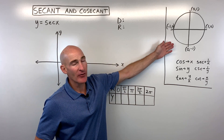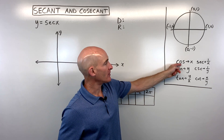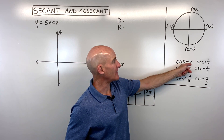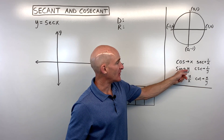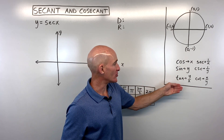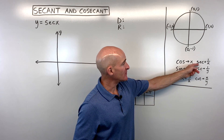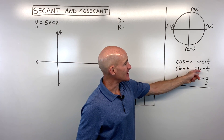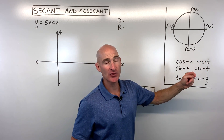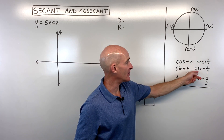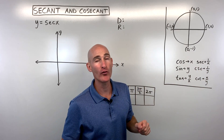If you've already learned about the unit circle, you know that on the unit circle, the cosine of an angle is the x-coordinate of the point, the sine is the y-coordinate, and the tangent is y over x. Here in this video, we're talking about the secant and the cosecant. The secant is the reciprocal of the x-coordinate, or 1 over x, and the cosecant is the reciprocal of the y-coordinate, or 1 over y.